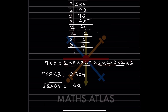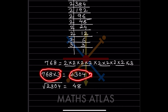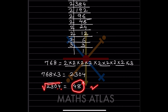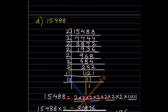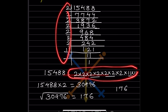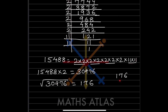For the next number, 3 is extra after grouping, so we multiply by 3. We get 2304, and the square root of 2304 is 48. For the last number in this set, the answer is 176.